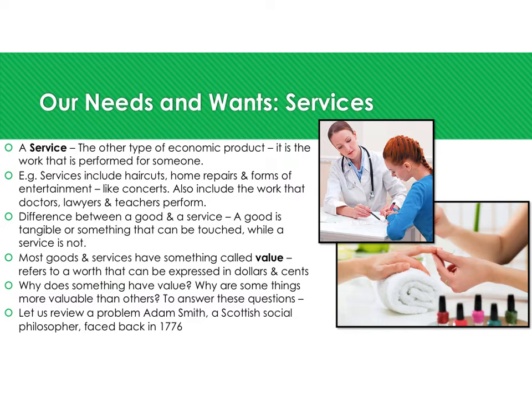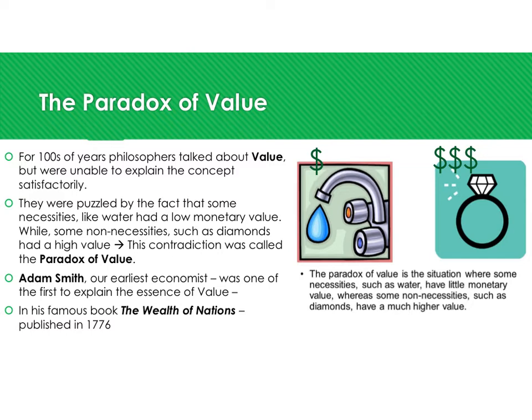Most goods and services have something called value, which refers to their worth expressed in dollars and cents. To understand why some things are more valuable than others, we review the paradox of value — a problem Adam Smith identified in 1776. Philosophers were puzzled by the fact that some necessities, such as water, had very low monetary value, while some non-necessities, such as diamonds, had high value.